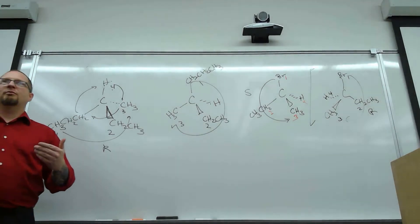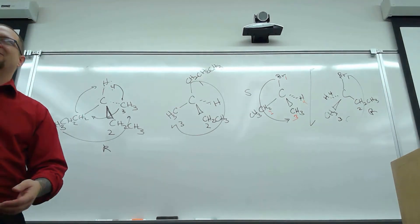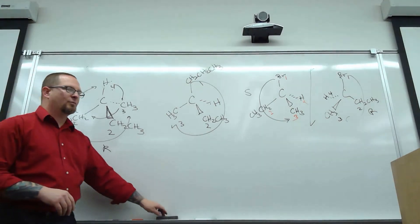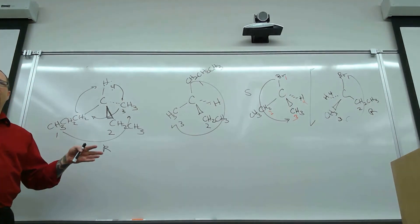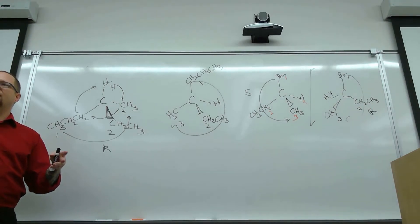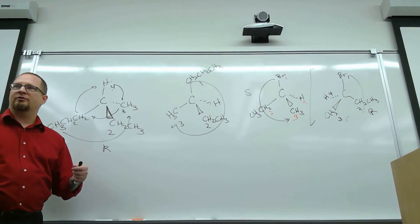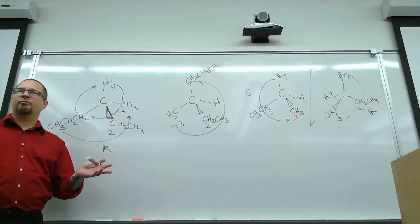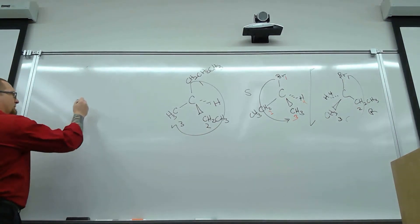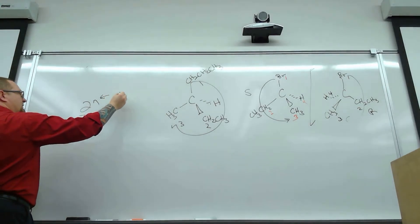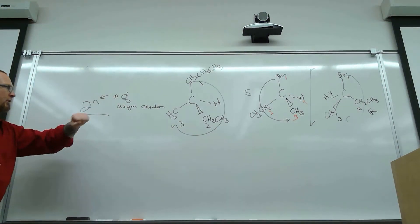Practice assigning R and S because down the road, many compounds have 2, 3, 5, or 6 chiral carbons. If n is the number of chiral carbons, 2 to the n gives the number of possible stereoisomers. So a compound with 4 chiral carbons has a potential 2⁴ = 16 stereoisomers. The number of asymmetric centers or chiral carbons (n) determines the maximum number of possible stereoisomers.